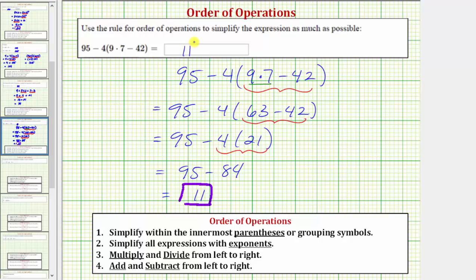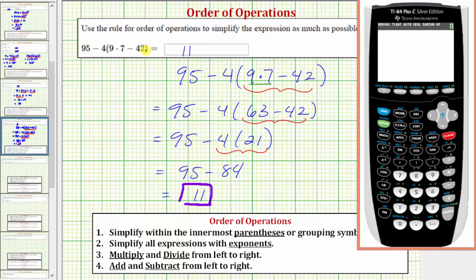Before we go, let's verify this on the graphing calculator. We enter the original expression: 95 minus 4, open parenthesis, 9 times 7, minus 42, close parenthesis, and enter. Notice we get a value of 11. I hope you found this helpful.